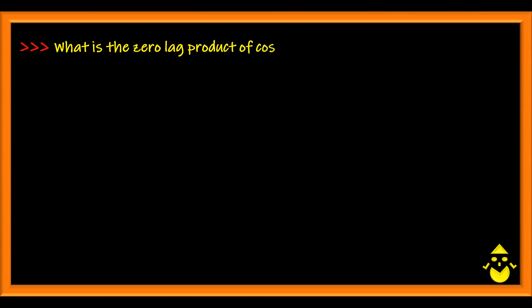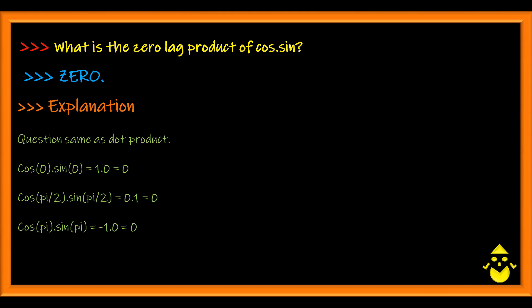What is a zero lag product of cosine and sine? It is equal to asking this question as what is the dot product of cosine and sine taken on the same phase, where both cosine and sine have equal phase or they are in the same phase. So that is your zero lag product. The answer is zero since you can see here: cos 0 into sine 0 is 0, cos pi by 2 into sine pi by 2 is 0, cos pi into sine pi is 0. So they are orthogonal signals, or the dot product is always zero.